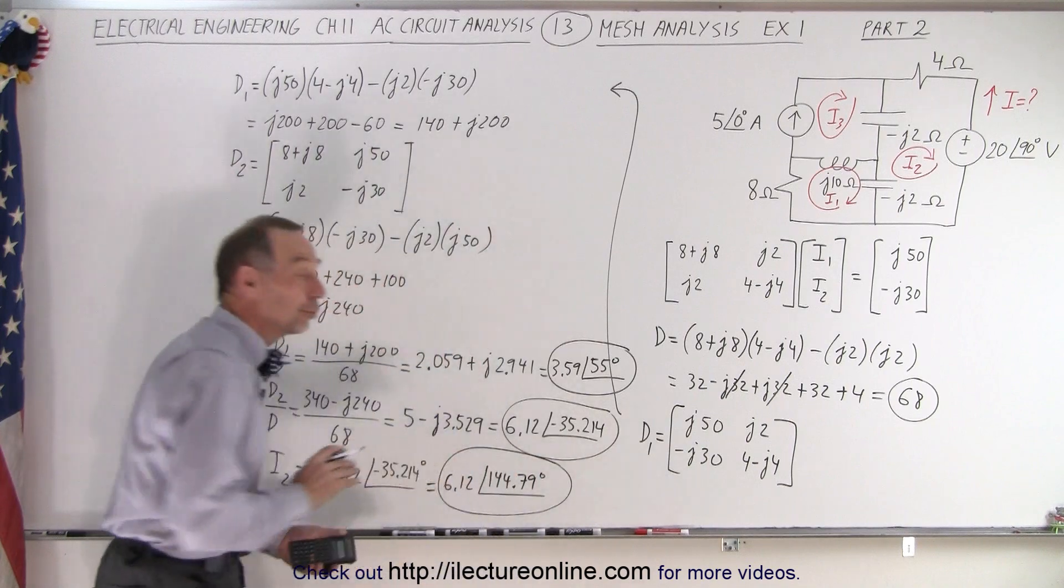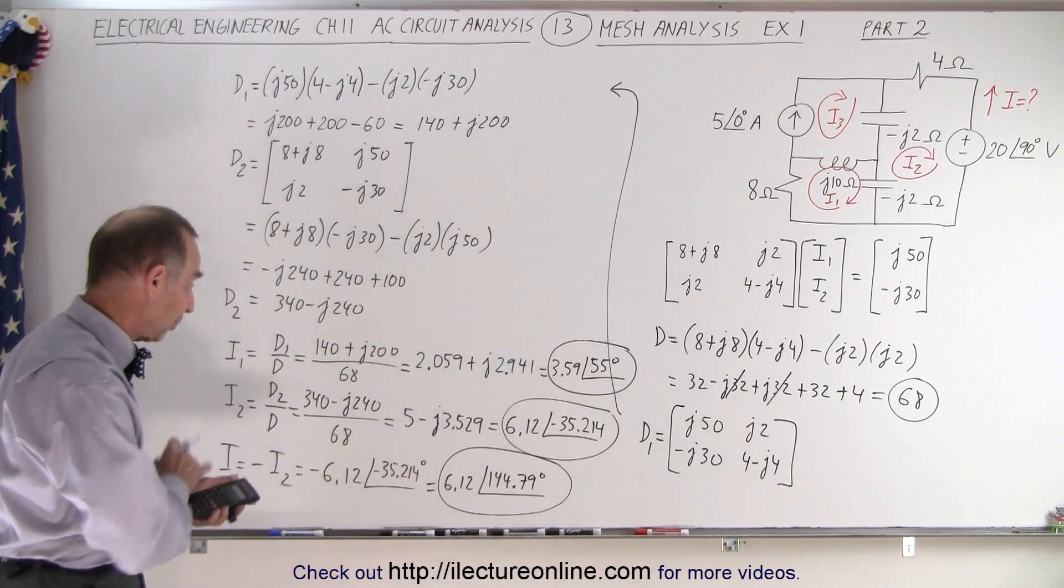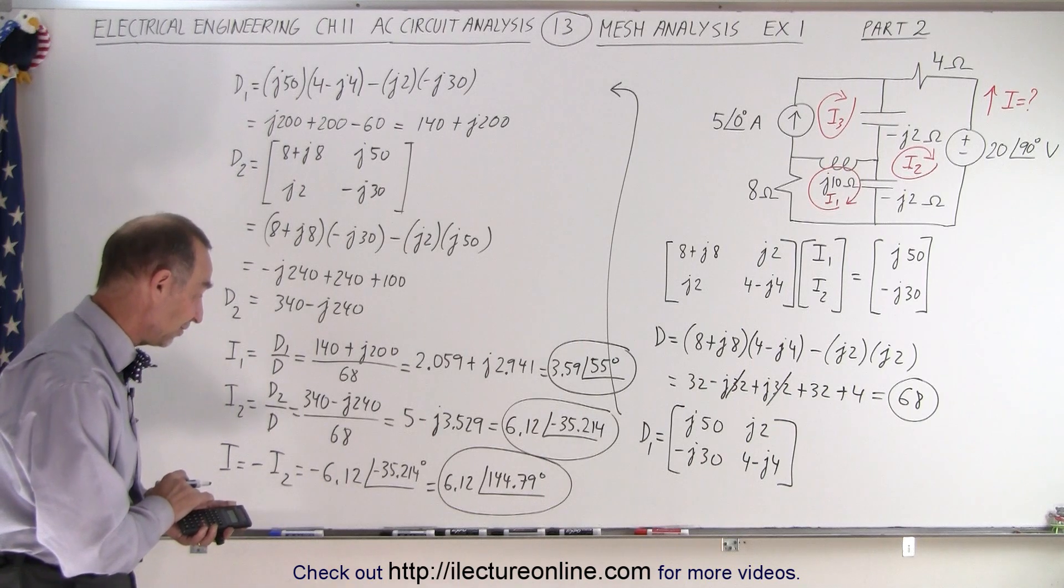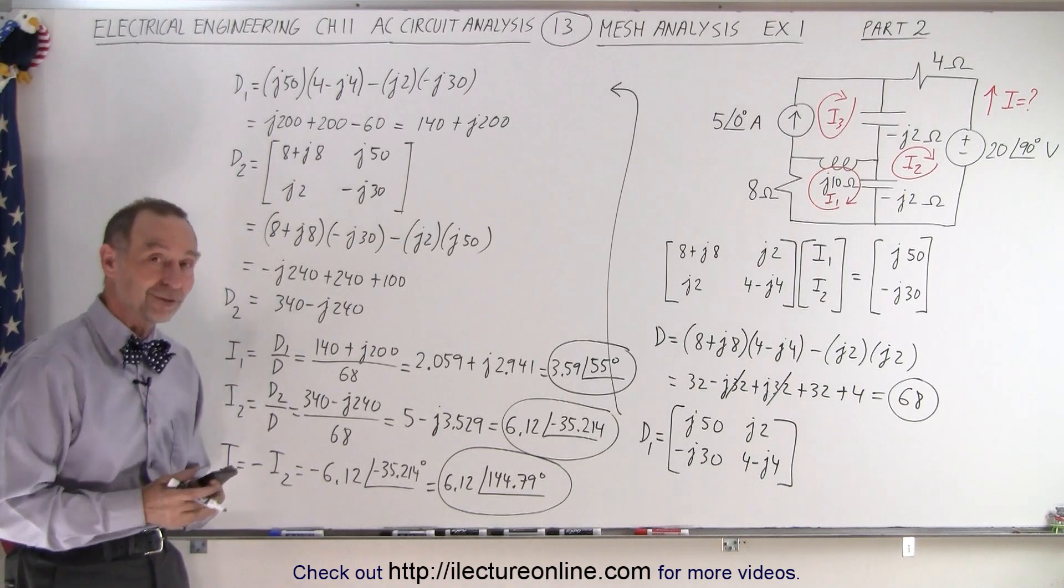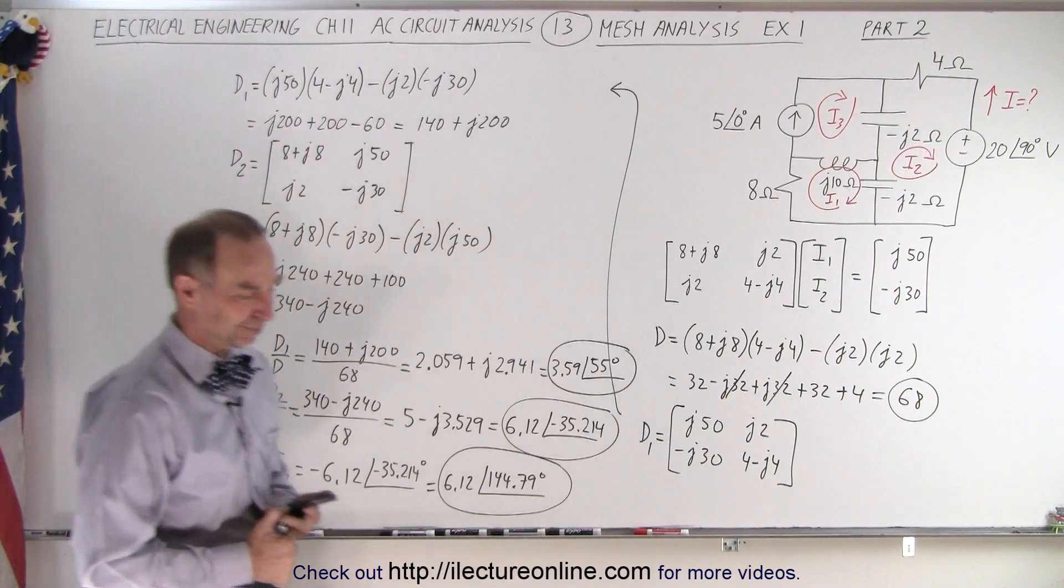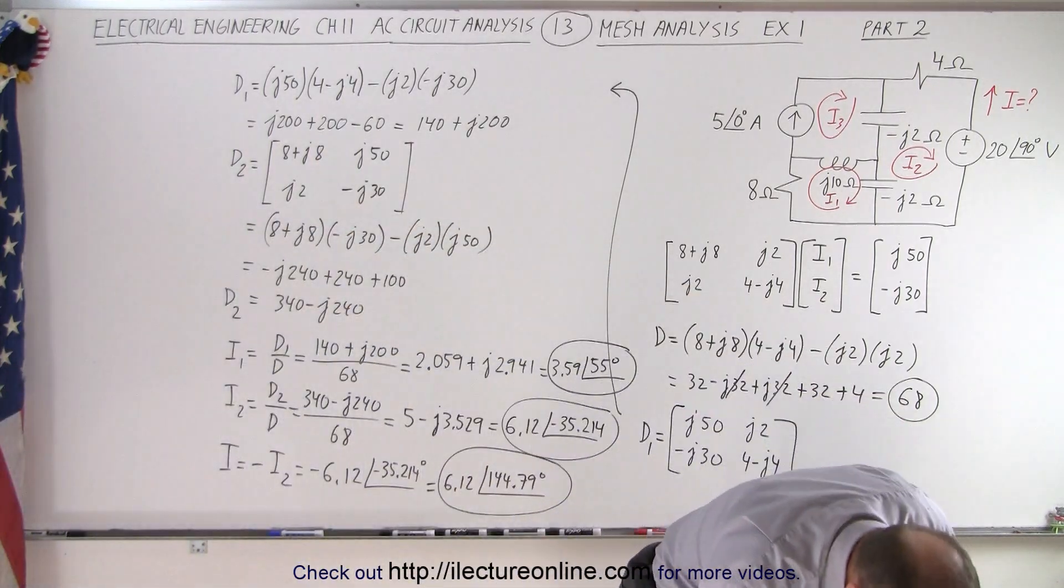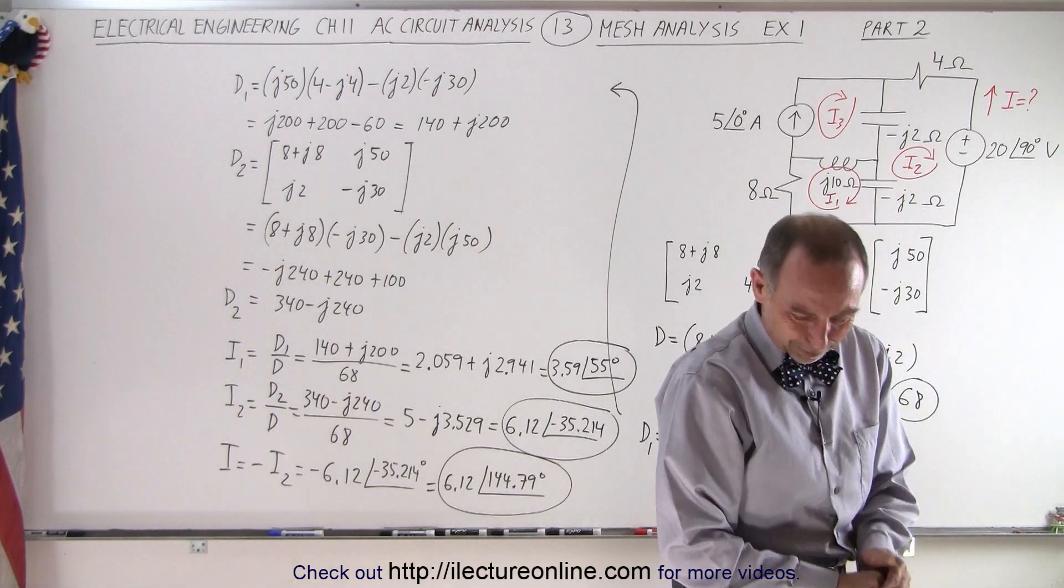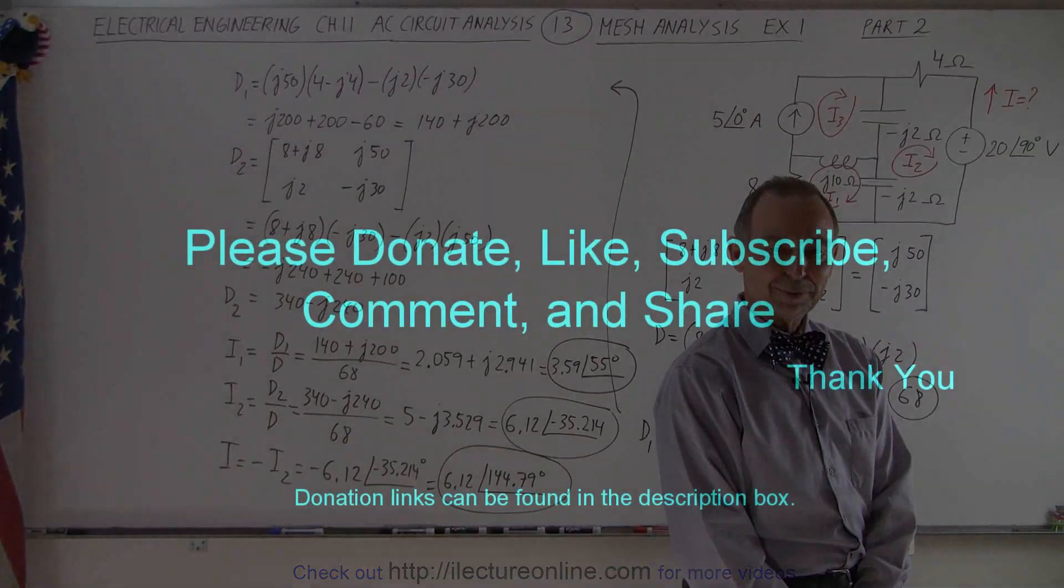And that would then be ultimately the current that we're looking for, I, 6.12 with a phase angle of 144.79 degrees. And that is how it's done. Now let's see if it's correct. Yep. That is correct. It was painful.